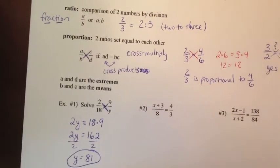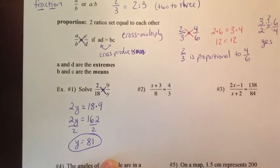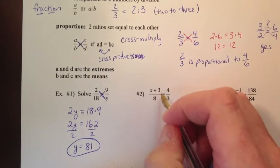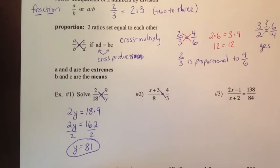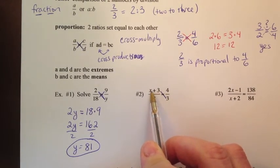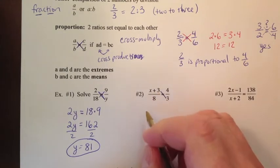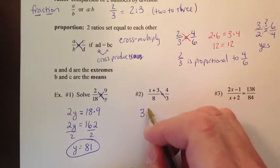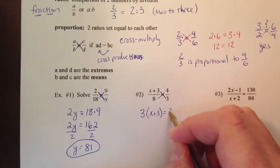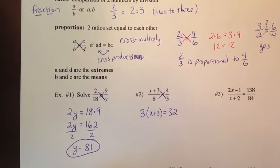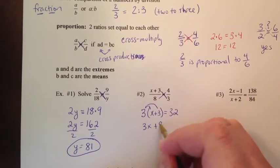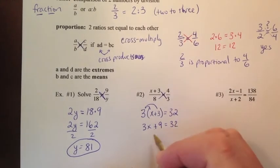Number 2. We'll take X plus 3 over 8 is equal to 4 thirds. We're going to cross-multiply. Now, this is where you have to be careful. This 3 is multiplying not just the 3, but all of this, X plus 3. So I'm going to write 3 and then parentheses X plus 3 equals 8 times 4, which is 32. What happens is you have to distribute. That's 3 times X, which is 3X. And then 3 times 3 is positive 9 equals 32.